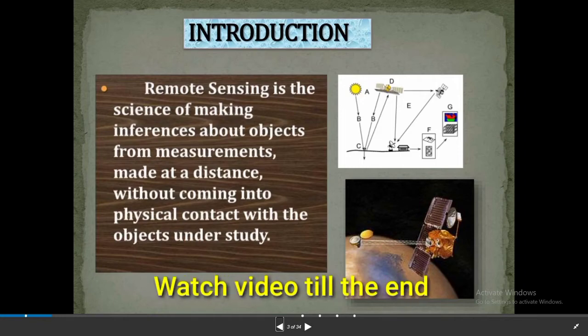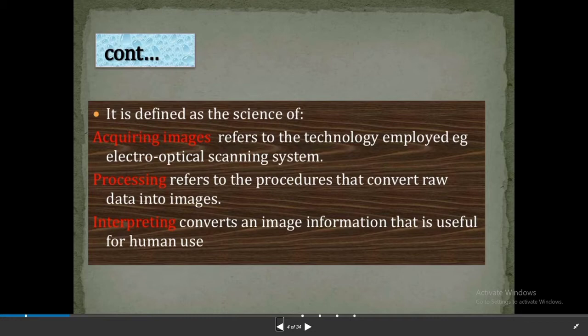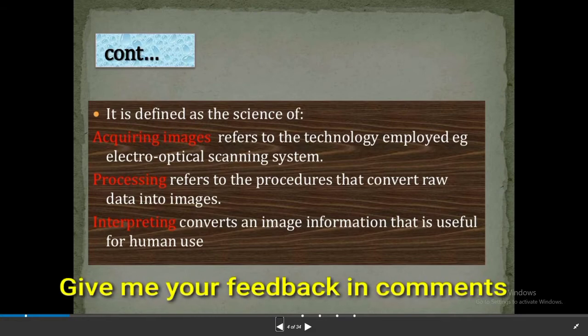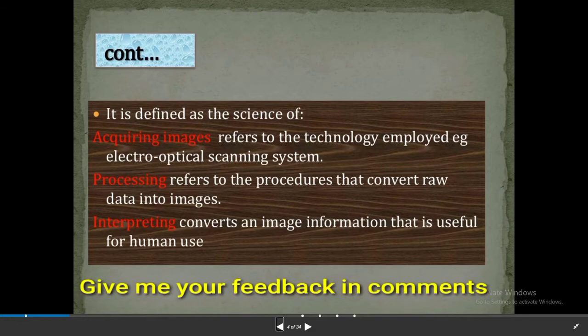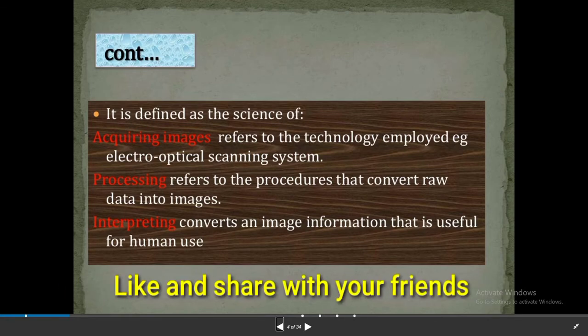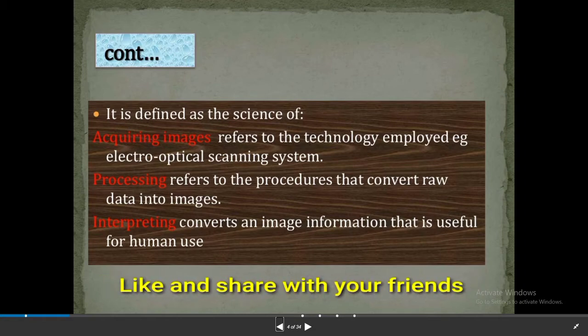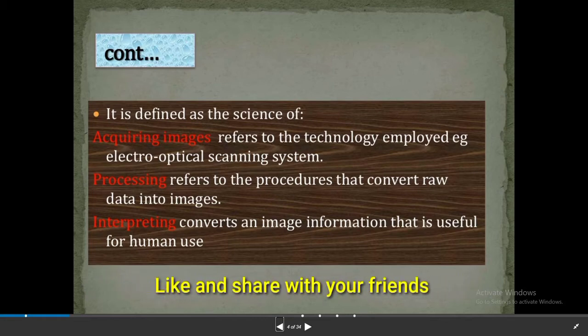So what is remote sensing? Basically, remote sensing is the science of making inferences about objects from measurements made at a distance without coming into physical contact with the object under study. It is defined as the science of acquiring images, referring to the technology employed — for example, electro-optical scanning systems — processing, which refers to the procedures that convert raw data into images, and interpreting, which converts image data into information useful for human use.